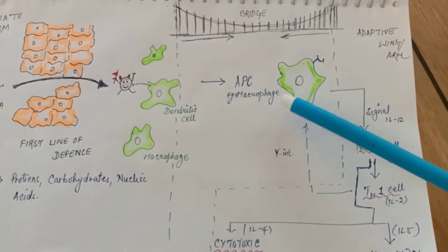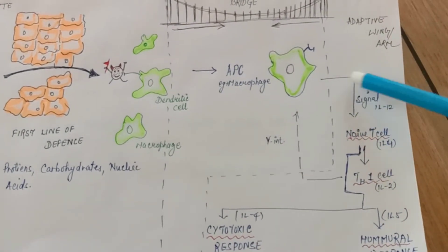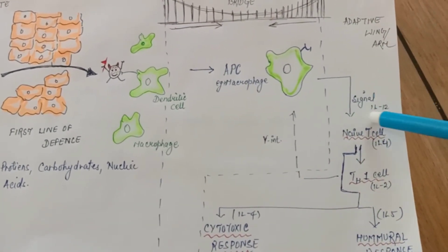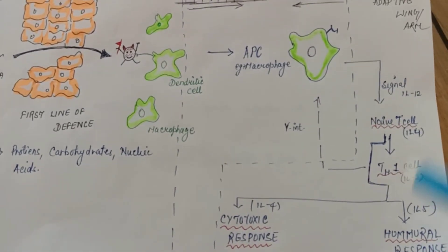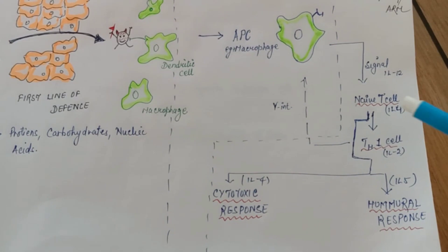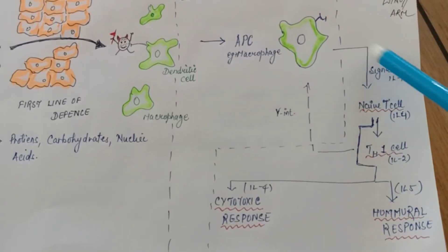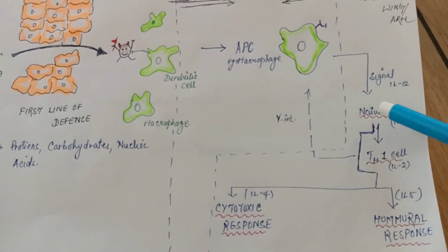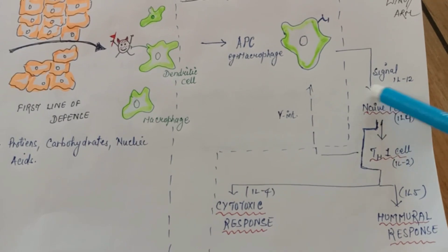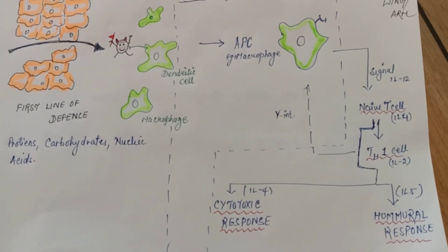Forget about IL-12 or anything interleukins or various, we'll see it later on. What are the various interleukins? Certain signals are there, they will activate T cell. This T cell is naive T cell. Naive means someone who doesn't know about their function.